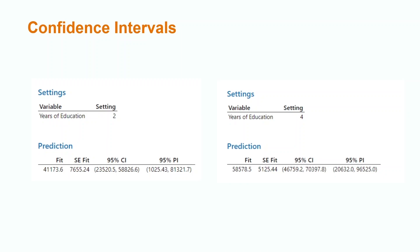According to our Minitab output, we can be 95% confident that the mean salary of everyone with a two-year degree is between $23,520.50 and $58,826.60. For everyone with a four-year degree, we can be 95% confident that their mean salary is between $46,759.20 and $70,397.80.